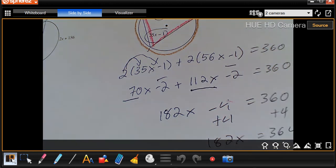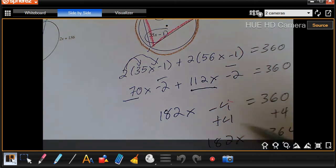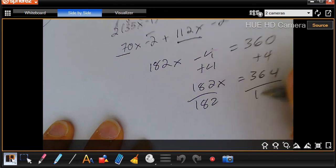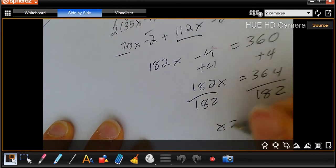Now I'm going to take 364 and divide that by 182. 364 divided by 182 just gives me 2. So X equals 2.